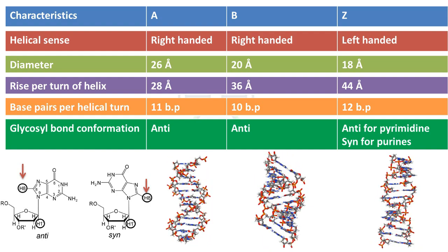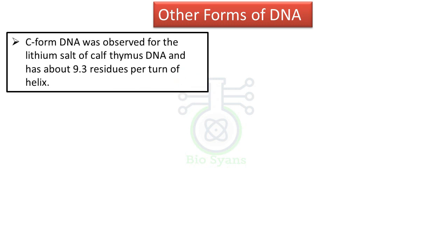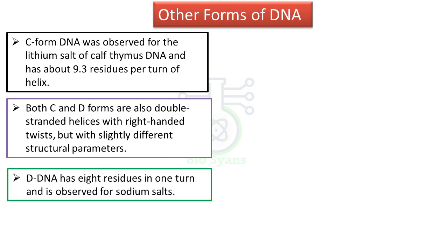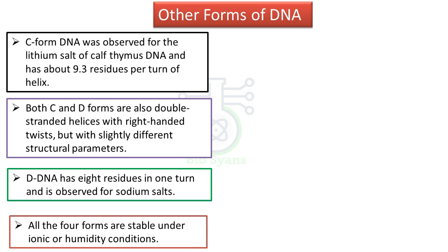Moving on to other forms of DNA. I'm not going to talk about all the forms, but I'll give you a little bit idea. C-DNA, also known as C-form DNA, is observed in relatively low humidity and in the presence of ions such as lithium and magnesium, and has 9.3 residues per turn of helix. Both C and D DNA are double-stranded helix with right-handed twist but slightly different in structural parameters. D-DNA has eight residues in one turn and is observed in sodium salts. These four forms of DNA, A, B, C, D, are known to be more stable under ionic and humidity conditions.